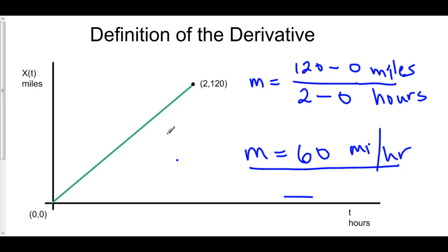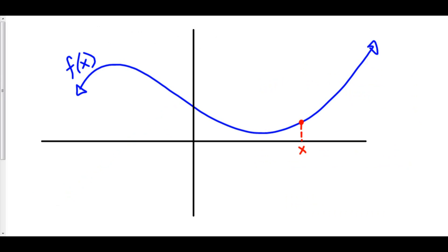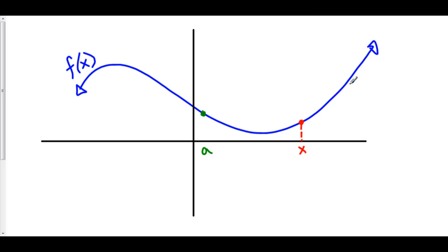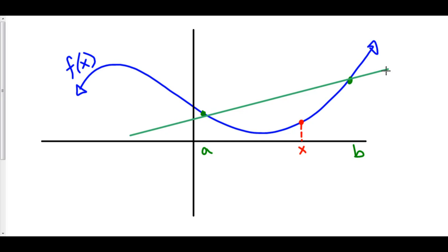But what happens if we want to find the slope, but we don't have a straight line? For example, what if our function looks kind of freaky, like this? Well, we could still find the average rate of change from point A to point B by finding the slope from point A to point B — that's average rate of change. But what happens if I want to know the instantaneous rate of change? The rate of change at one particular, infinitely small moment — then I'm going to have to do something completely and entirely different.